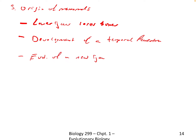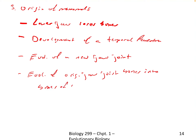We see the evolution of a new jaw joint, one that is unique to mammals that no other vertebrates have. And we see the evolution of the original jaw joint bones into bones of the middle ear - again, a distinctly mammalian characteristic.